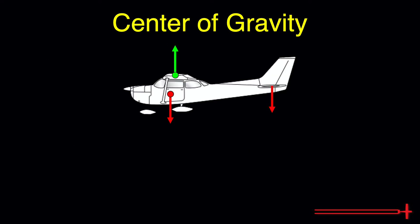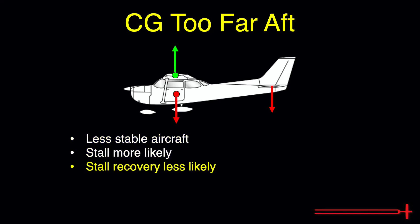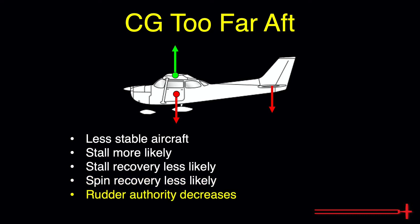Now, let's talk about the negative effects of moving the CG too far aft and forward. We'll begin by moving the CG aft, too close to or even behind the center of lift. The airplane becomes unstable and upset becomes a concern. Stall entry becomes more likely and recovery from a stall becomes less likely. The same is true for spin recovery, as the spin may become flat, making it difficult or impossible to recover. Rudder authority also decreases as our CG moves aft.